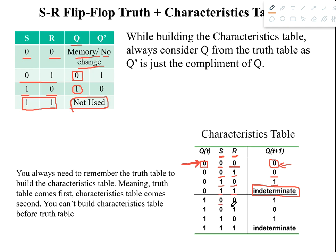For the one-one combination we can see that the output was 'not used,' meaning we could not use this specific combination. That's why we write 'not used' or 'indeterminate' — both are correct. Then for the next combination, S equals zero and R equals zero again, the output is no change, so the next state remains the same as the present state. The present state is one, so the next state is one again. For zero-one we got a direct value, for one-zero we got one, and for one-one we write indeterminate.